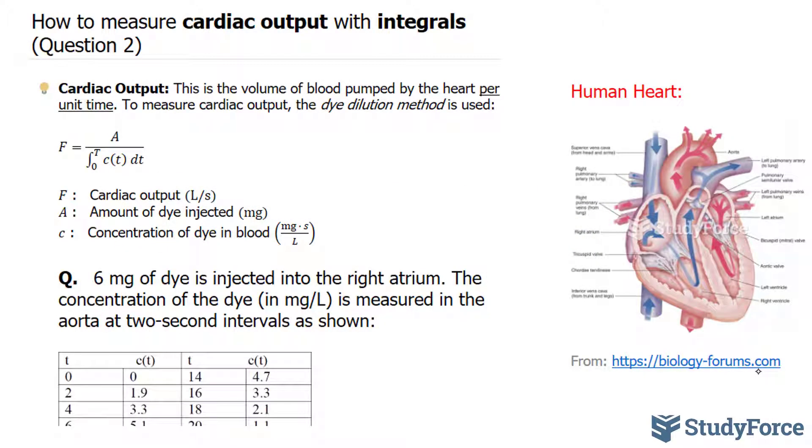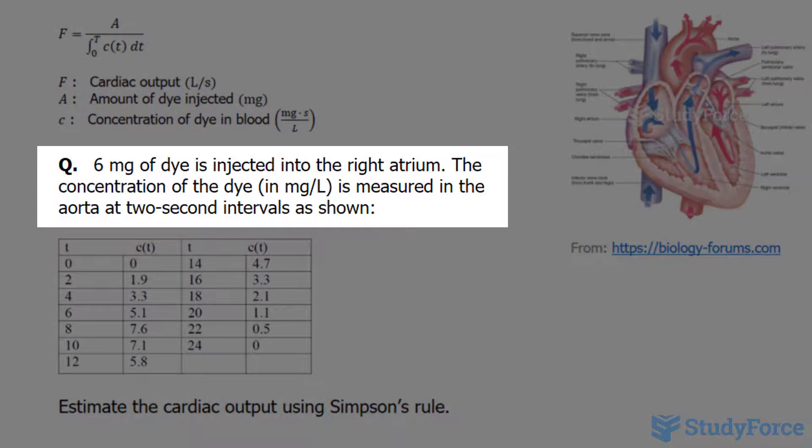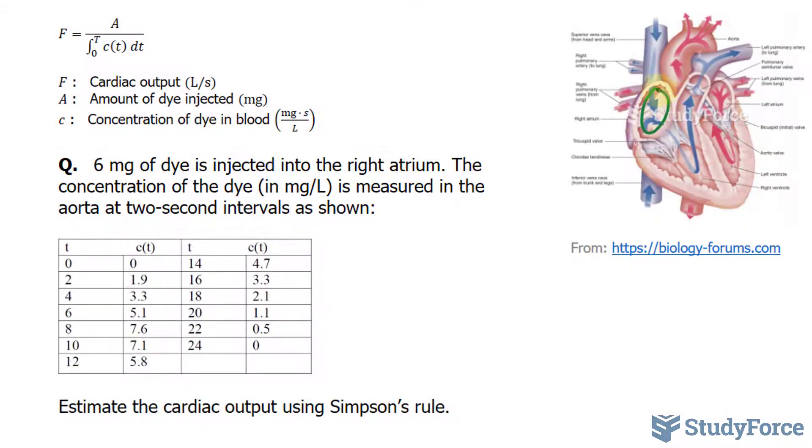In Question 2 of this series, we'll learn how to measure cardiac output with integrals. The question reads: 6 milligrams of dye is injected into the right atrium. This is the right atrium. The concentration of the dye, in milligrams per liter, is measured in the aorta at two second intervals as shown in the table.